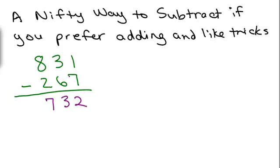Now you take the top number here, what you're subtracting from, the 831, and you're going to add that to it. So remember how I said this is a nifty way to subtract if you like adding? So notice I'm doing an addition problem. You could use any addition method you want. So I'm going to go left to right, 1563.